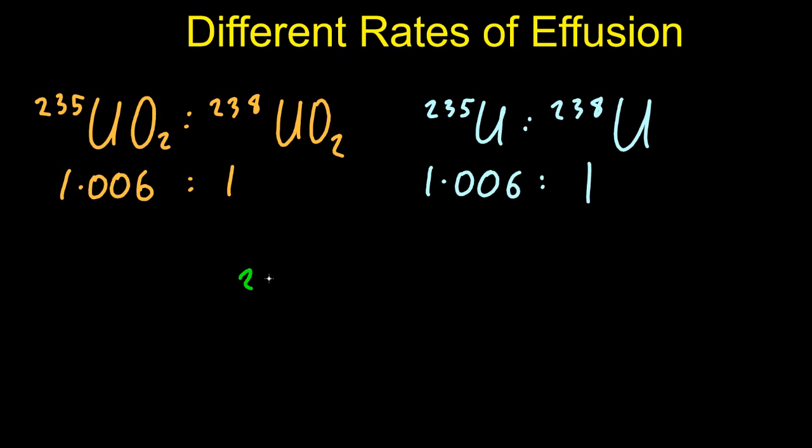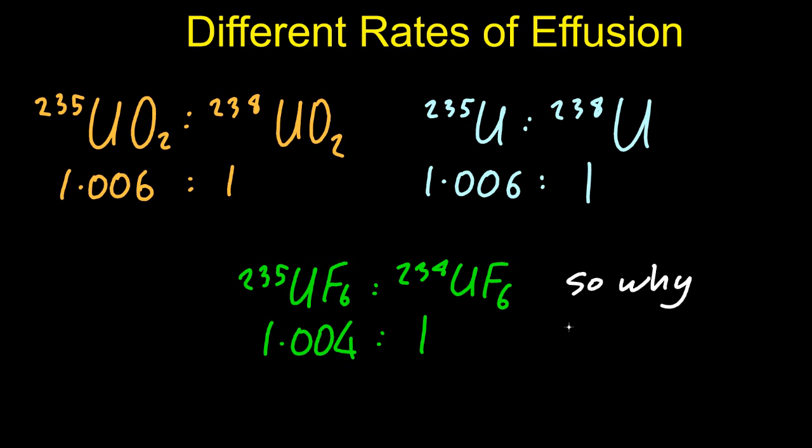Once these are turned into a gas, their rate of effusion is very similar, so it's going to be hard to separate them. So what do they use? They actually use uranium hexafluoride, but paradoxically that has an even worse differential between the rates of effusion. So why is this one used?